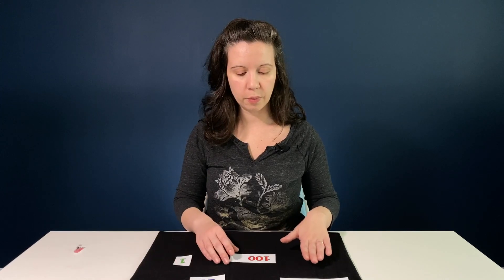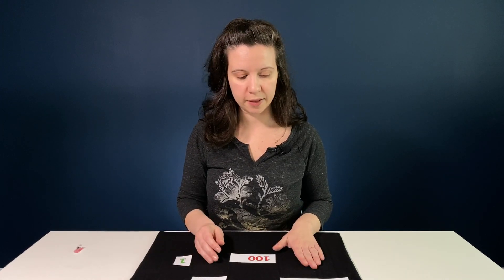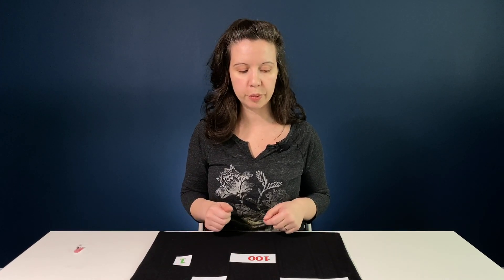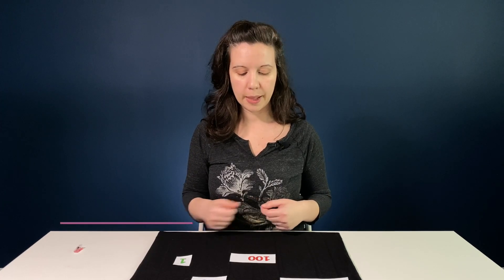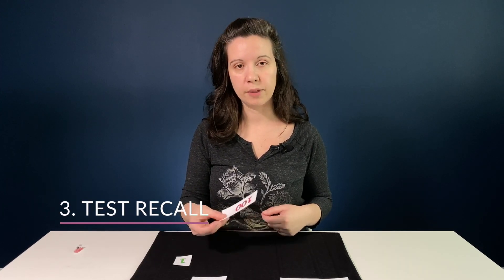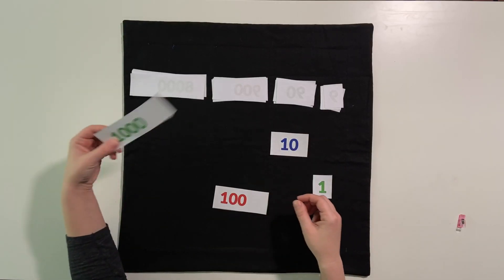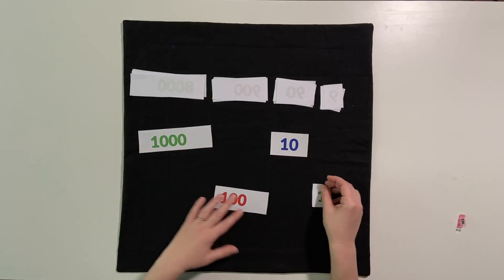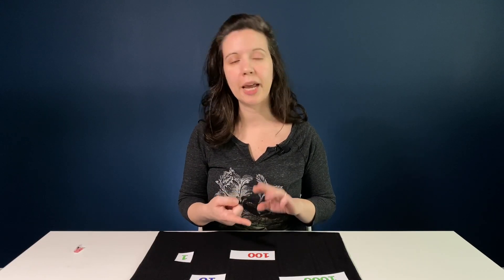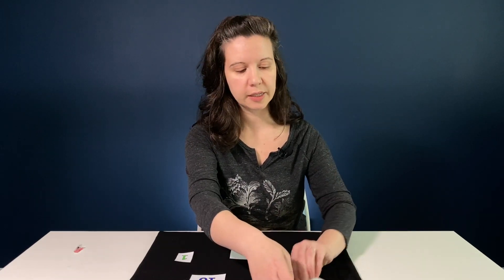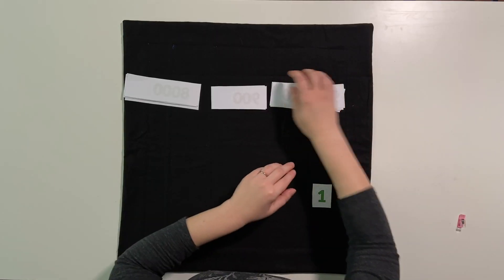Once you're sure they understand, do the third period. Ask: Will you please tell me what this is? They would say one hundred. What is this? One ten. What is this? One thousand. What is this? One unit. Now you've done naming, recognition, and recall. You know that they know what these are. You can put them back into their stacks.